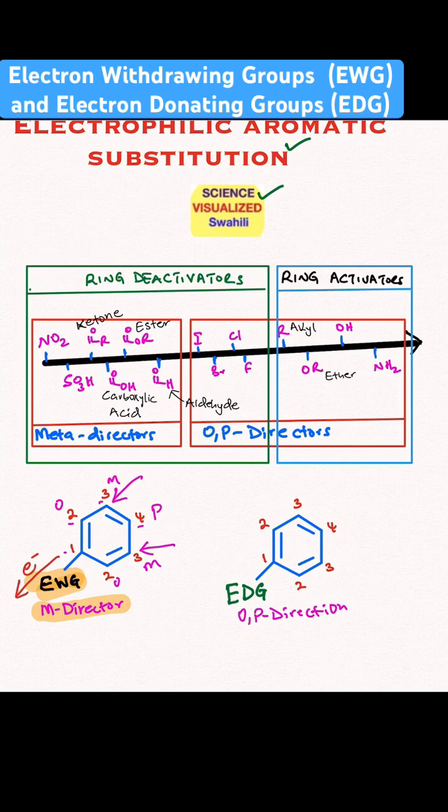On the other hand, the electron donating group increases the ring's electron density, so they activate the ring. So you call them ring activators. Electron withdrawing groups are ring deactivators.